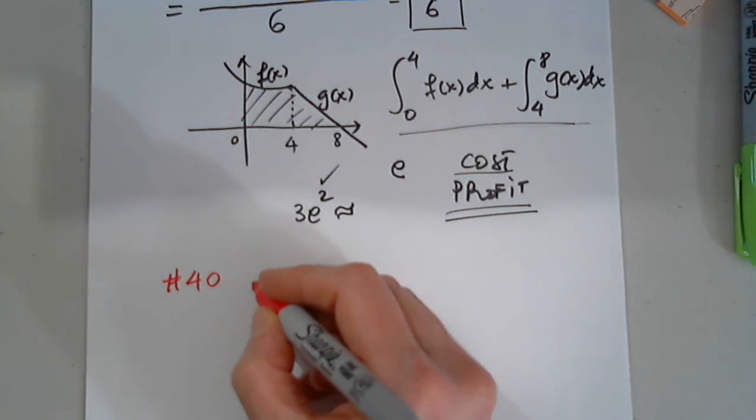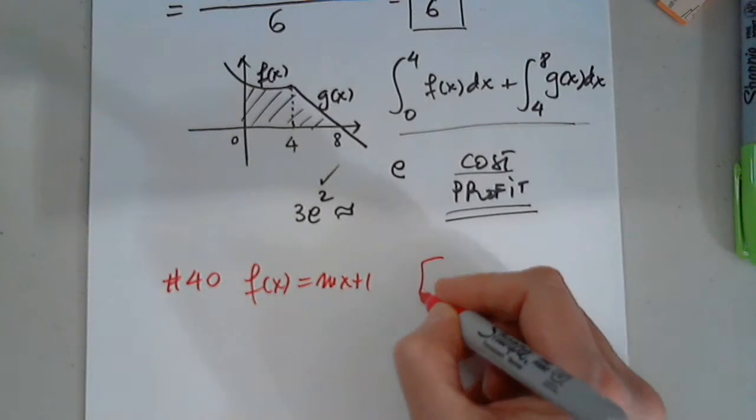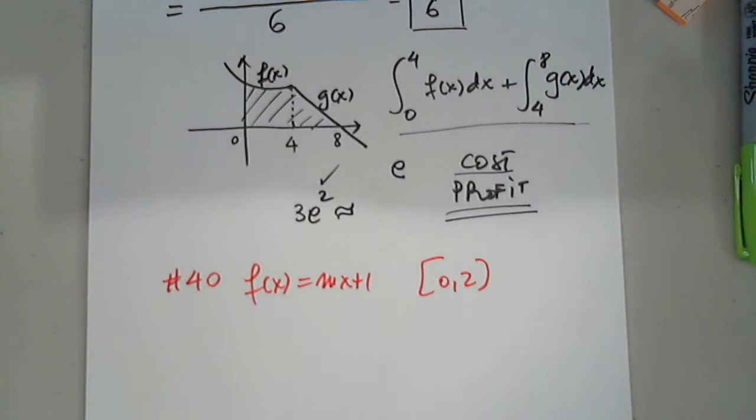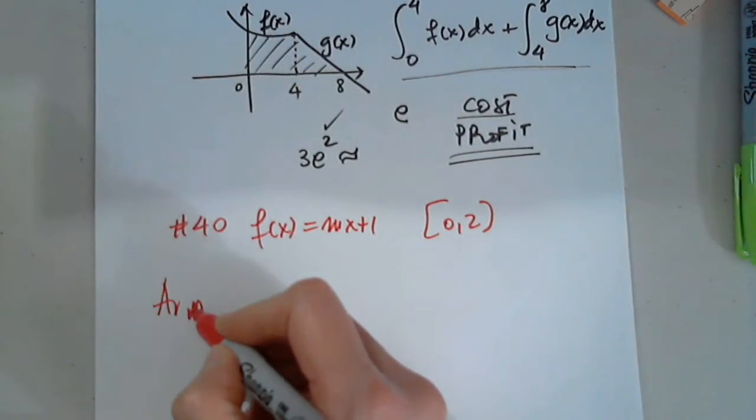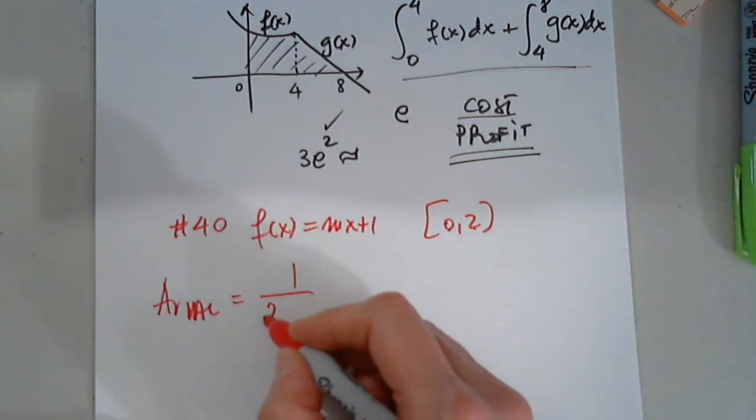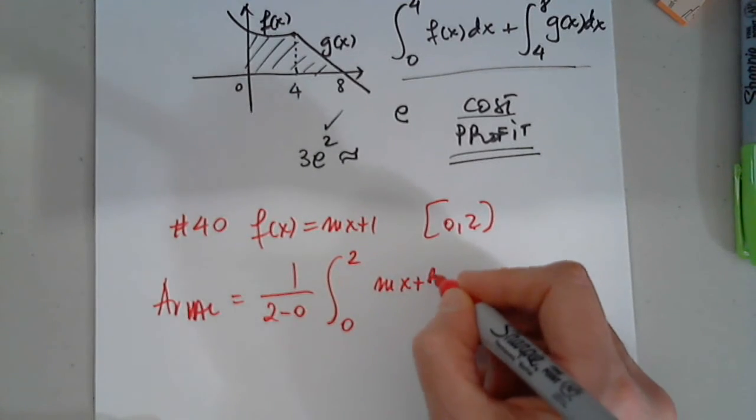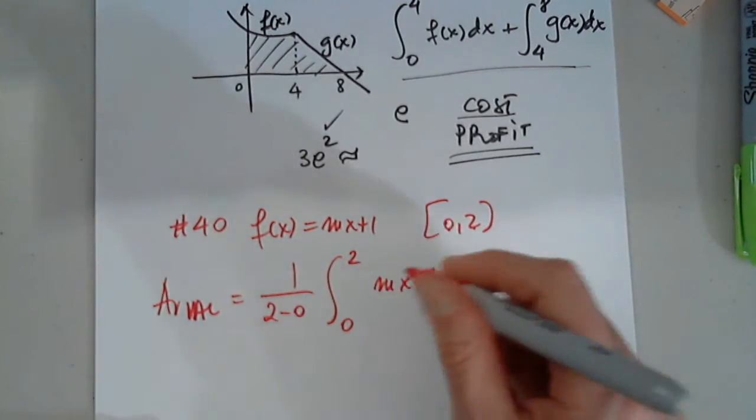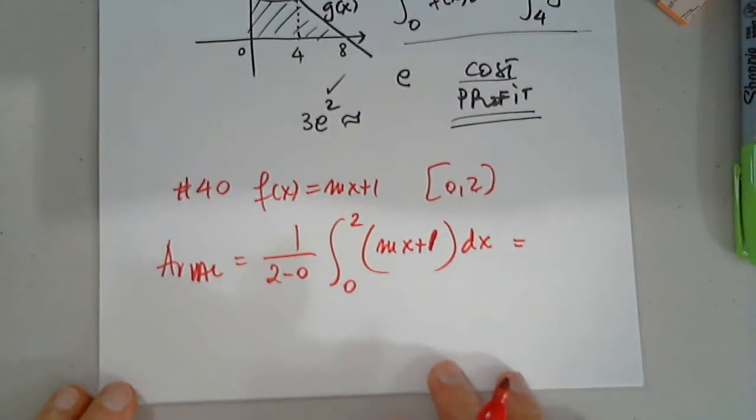Okay, so we chose problem 40. I have f of x equals mx plus 1, and the interval is 0 to 2. Perfect. I'm going to stop sharing. So we know that the average value is 1 divided by 2 minus 0. I'm going to write the integral from 0 to 2 of mx plus 1 dx.